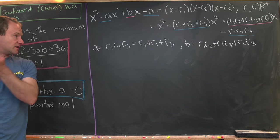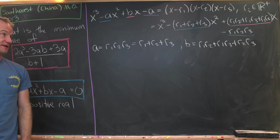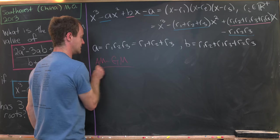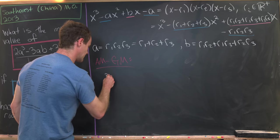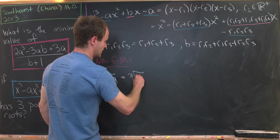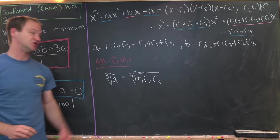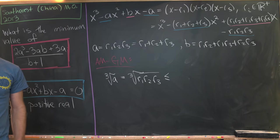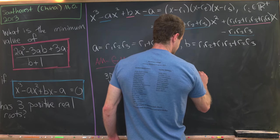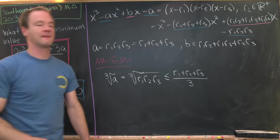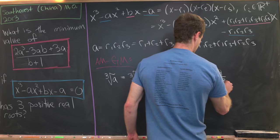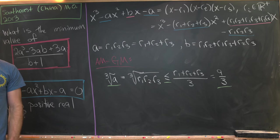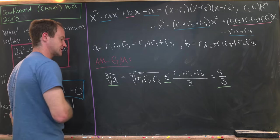The fact that a equals both the product and the sum of the three roots really suggests we should use the AM-GM inequality. The cube root of a equals the cube root of r₁r₂r₃, which is the geometric mean of the three numbers, and that is less than or equal to the arithmetic mean (r₁ + r₂ + r₃)/3, which equals a/3.